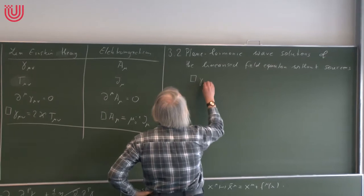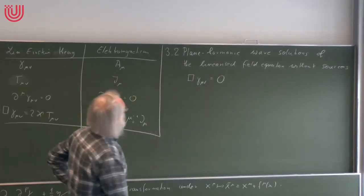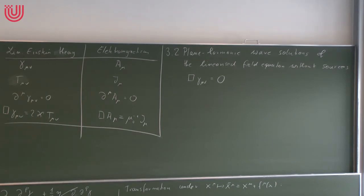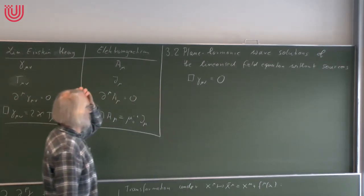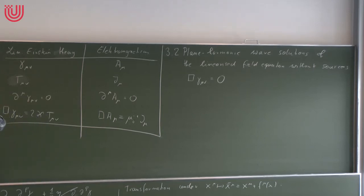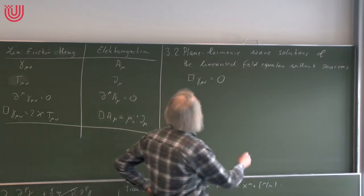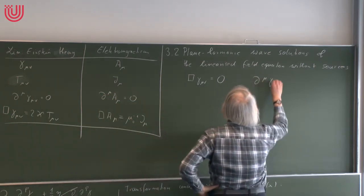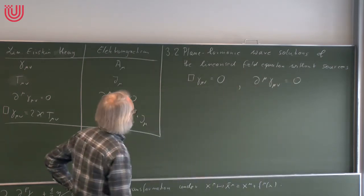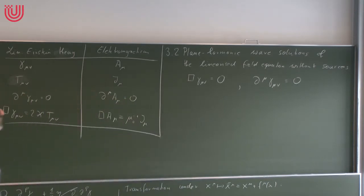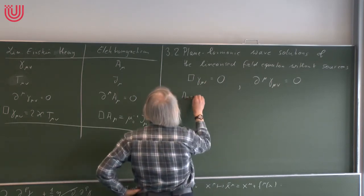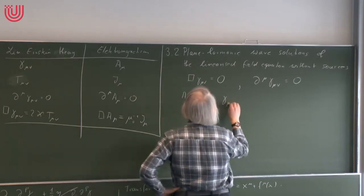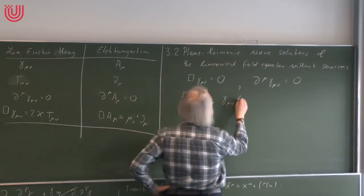The field equation □γ_μν = 0 written out in coordinates is 10 equations for the 10 components of γ_μν (a symmetric 4×4 matrix: 4 diagonal plus 6 upper triangle). We work in the Hilbert gauge, so ∂^μ γ_μν = 0 must also be satisfied. Our ansatz for plane harmonic waves: γ_μν(x) = Re(A_μν e^{ik_σ x^σ}), where k = (k_0, k_1, k_2, k_3) is real and constant — a constant wave co-vector — and A_μν are complex constant amplitudes.